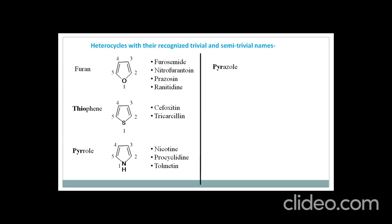Next is pyrazole. 'Pyr' indicates the heterocyclic ring has nitrogen, and '-ole' indicates it is a 5-membered ring. But it also has an 'aza' — the 'a' is dropped because the stem starts with a vowel. So it has a 5-membered ring with 2 nitrogens.